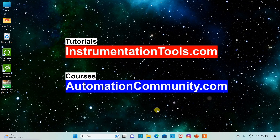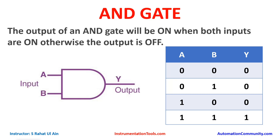Welcome to Automation Community. In this video we are going to discuss logic gates. Starting with the AND gate: the output of an AND gate will be on when both inputs are on, otherwise the output is off. As shown in the truth table, when both inputs are off the output is off, and when one input is on the output is still off. Only when both inputs are on will the output be on. Now let's move to EcoStruxure Machine Expert and draw the ladder logic for an AND gate.